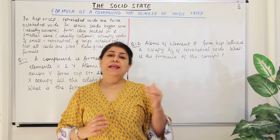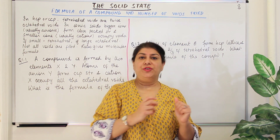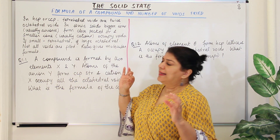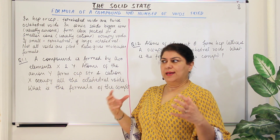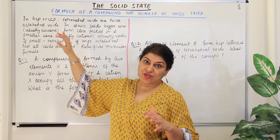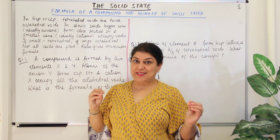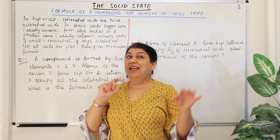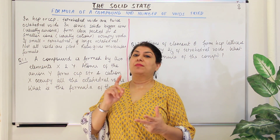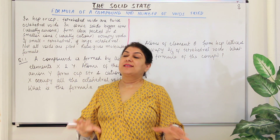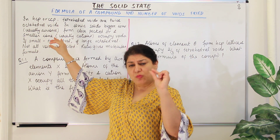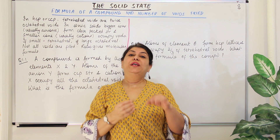Generally, anions are larger because cations are usually formed by the loss of a shell. So we assume the larger anion occupies the lattice sites in a closed packed structure — whether HCP, face-centred cubic, or body-centred cubic — all lattice sites are occupied by the larger anion. The smaller cations then occupy the voids.